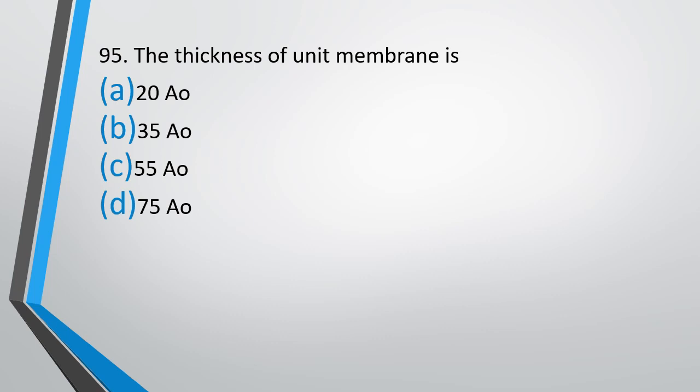Question number 95. The thickness of a unit membrane is? Option A: 20 Angstrom. Option B: 35 Angstrom. Option C: 55 Angstrom. Option D: 75 Angstrom. The correct answer is Option D — the thickness of a unit membrane is 75 Angstrom.